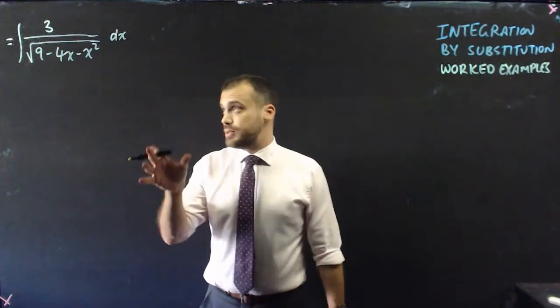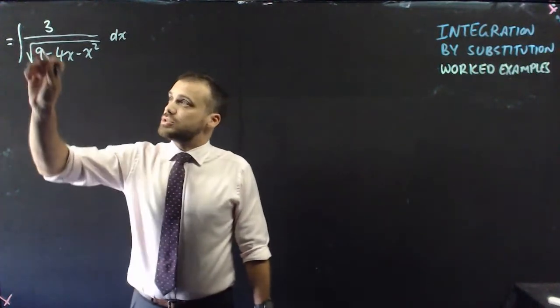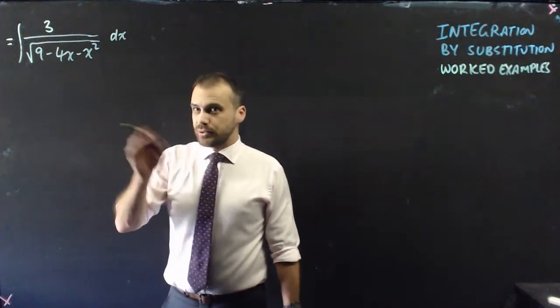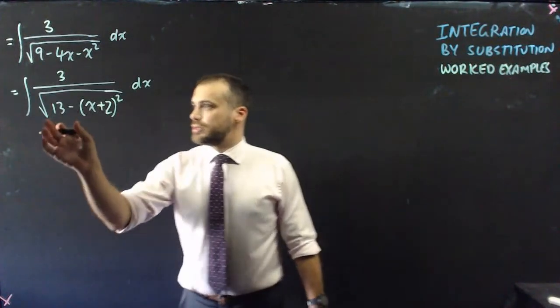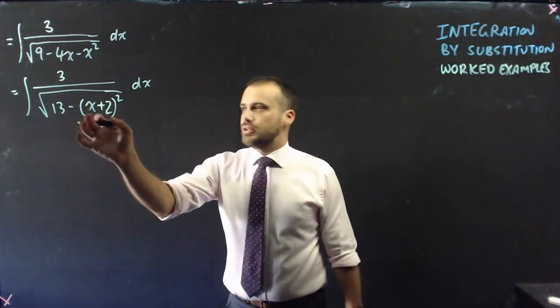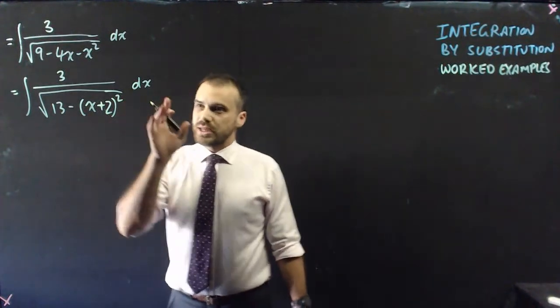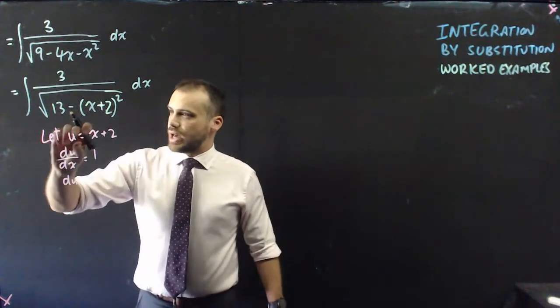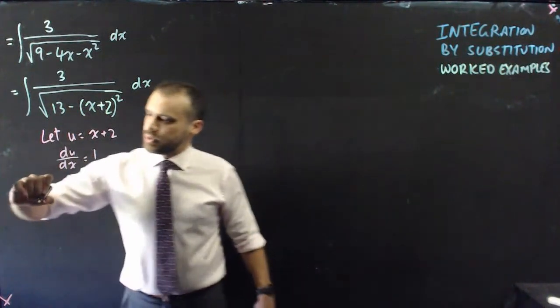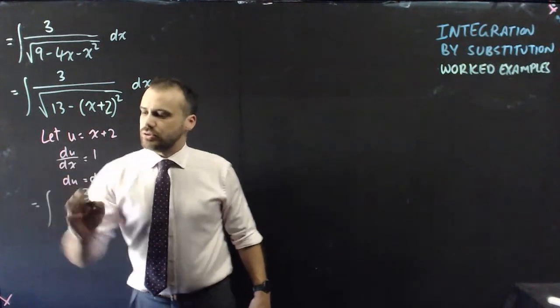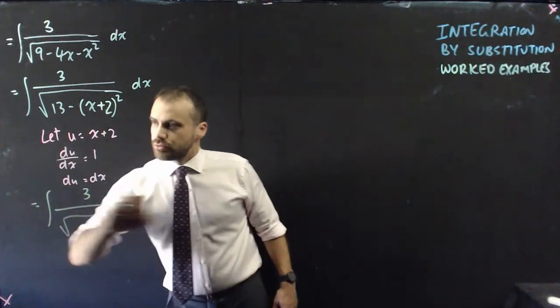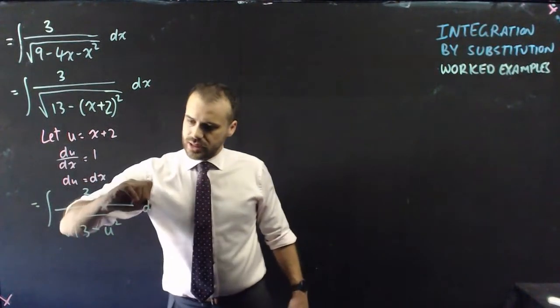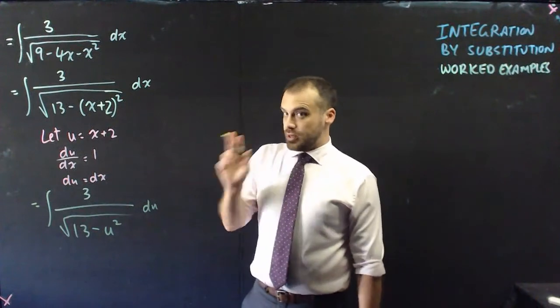Last one, and we up the ante again by doing a similar sort of thing, but there's a square root there. Now, again, we've got this quadratic, so we're going to complete the square, and then we look at it, and we say, okay, we've got this fancy little function inside a function, so we can let u equal x plus 2. Now, once I've done that, and I just did it, we can sub that in, and we can sub that in as well. So, we'll say that it's the integral of 3 over the root of 13 minus u squared, and du there.